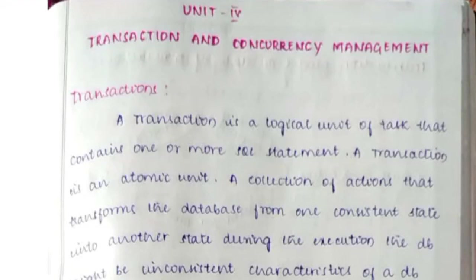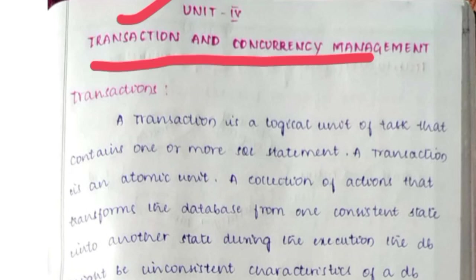Welcome back to our channel. In this video we are going to revise the fourth unit in RDBMS subject. In our previous videos I have already uploaded unit number two, unit number five, unit number one, and unit number three. Only unit number four is remaining. In this video we are discussing unit number four, which is Transaction and Concurrency Management.